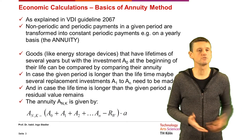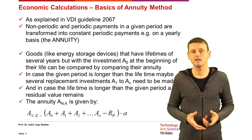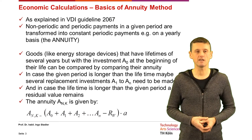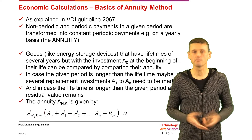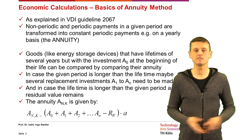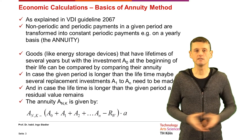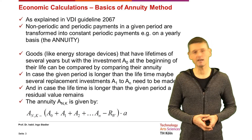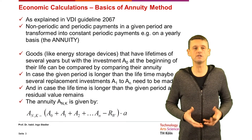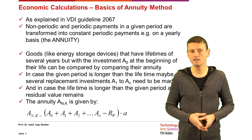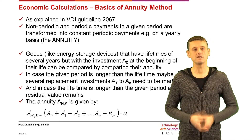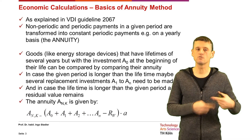We have the problem that goods like energy storage devices have lifetimes of several years but with an initial investment A0 at the beginning of their life. If the given period is longer than the lifetime, several replacement investments A1 to AN may need to be made. And if the lifetime is longer than the given period, a residual value will remain. The overall annuity ANK is given by the sum of all investments — initial and replacement — minus the remaining residual value, multiplied by the annuity factor A.